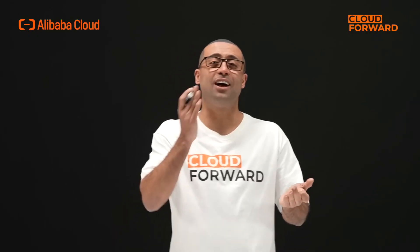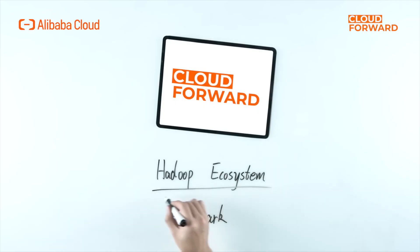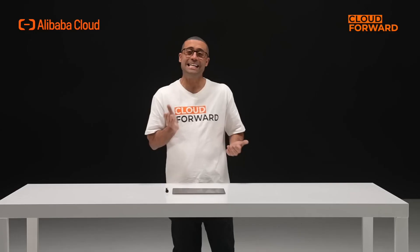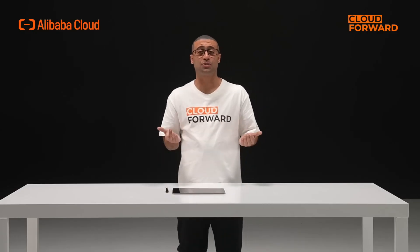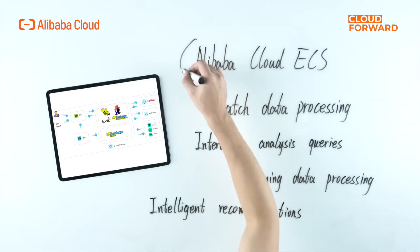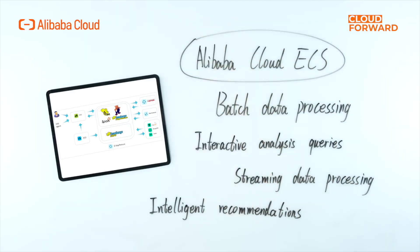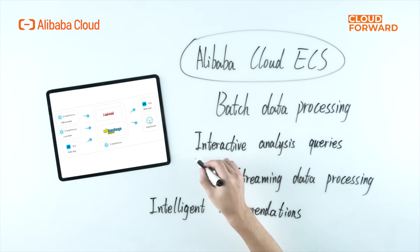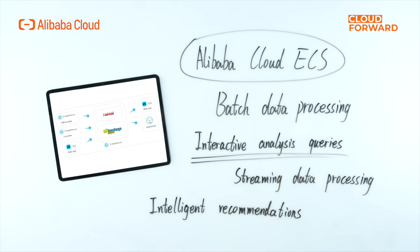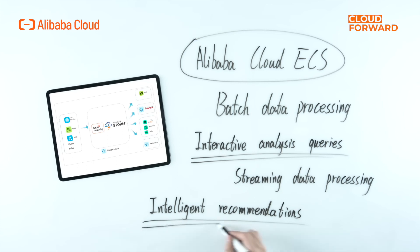Now let's talk about application scenarios. Whatever the Hadoop ecosystem and Spark can do, so can EMR. It is by its nature a cluster service of Hadoop and Spark, so you can totally regard Alibaba Cloud ECS machines as your own private hardware. Use them for batch data processing, interactive analysis queries, streaming data processing, intelligent recommendations, and more.